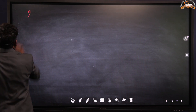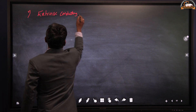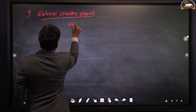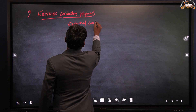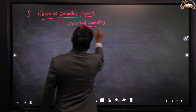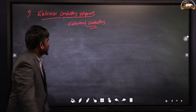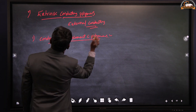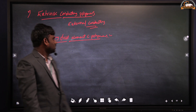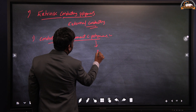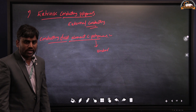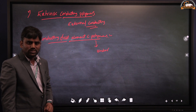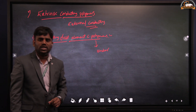Moving to the second classification: extrinsic conducting polymers. Extrinsic conducting polymers exhibit conductance by adding some external conducting substances. Extrinsic conducting polymers are classified into two types. The first one is conducting filler element conducting polymers, where the polymer acts as a binder. While adding the external substance, the polymer binds that external substance and then exhibits conductance.